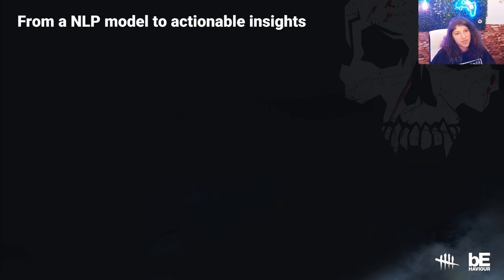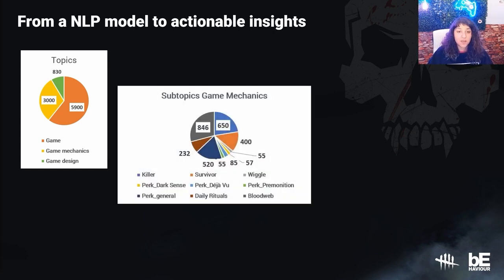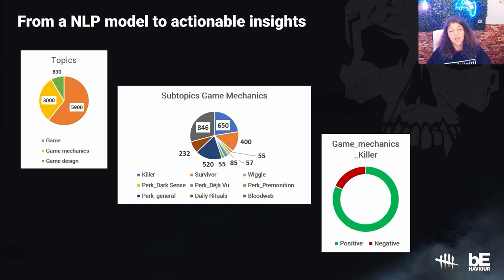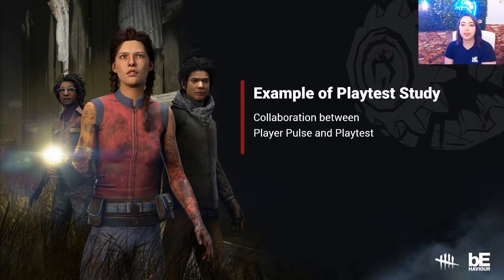In practical terms, we start from an NLP model and our data. We retrieve topics, and for each topic we have subtopics. For each subtopic, we can measure the sentiment — whether people are discussing that subtopic in a positive or negative way. After that, we shape the insights for our stakeholders. The Player Pulse has also been a very helpful tool to build protocols and processes for our playtests.